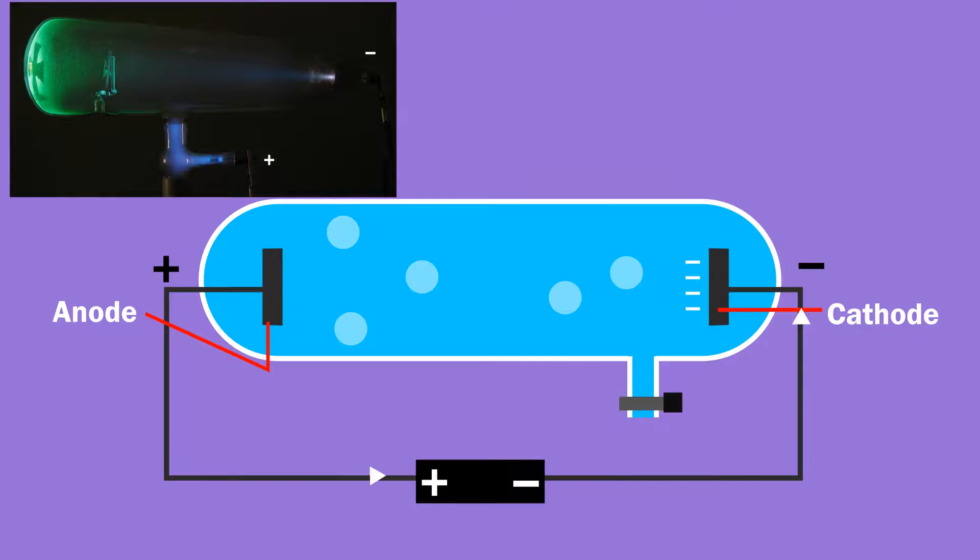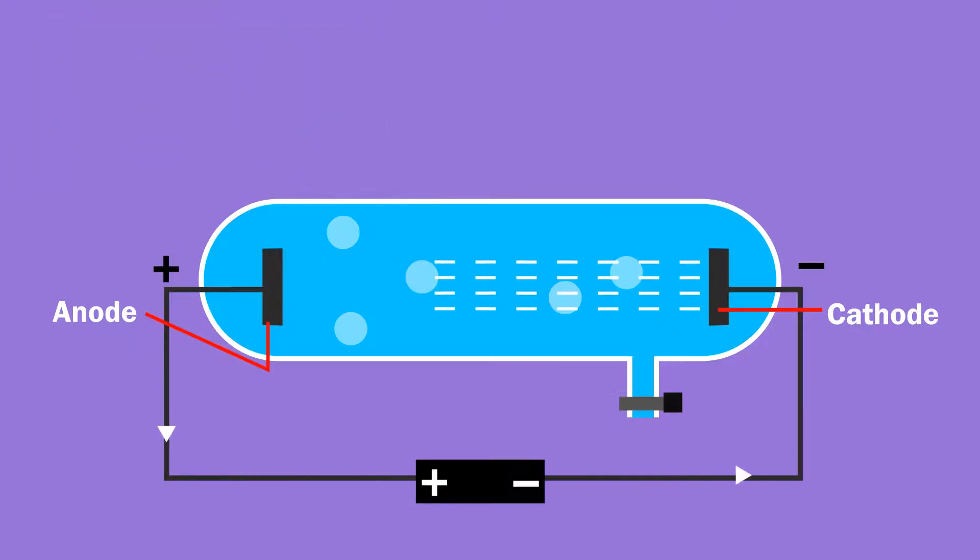He and fellow scientists named these rays cathode rays because they were emitted from the cathode. They further experimented with different setups to understand more about these rays.